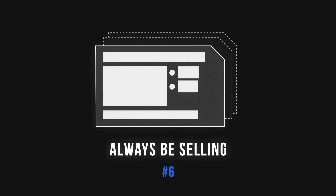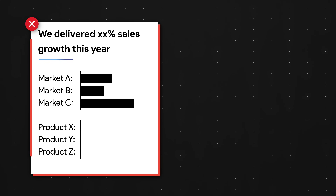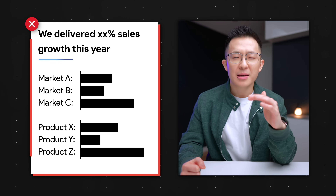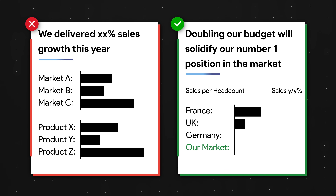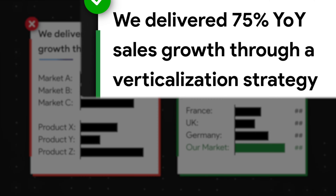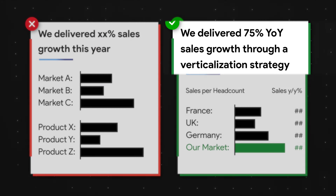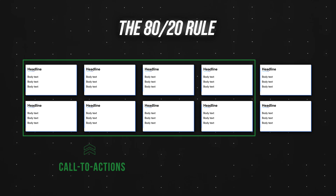Now let's move on to the content within the slides. The most important thing to remember here is to always be selling with call to actions. A weak slide just shows sales numbers without telling you what to do with them. A better slide with an explicit call to action would take the same data but reorganize around 'doubling our budget will solidify our number one position in the market.' An implicit call to action might look like 'we delivered 75% year-on-year sales growth through a verticalization strategy,' implying you did a great job and setting up a request. Slides that serve purely as updates should follow the 80-20 rule: 80% of slides should have call to actions, and 20% can be educational.